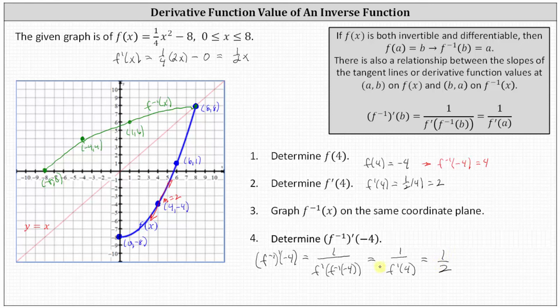Looking at this graphically, if we go to the inverse function and locate the corresponding point where x equals negative 4 — the point negative 4 comma 4 — and sketch a tangent line at this point, the slope of this tangent line is equal to the reciprocal of 2, or one-half. That's because 4 comma negative 4 on f of x corresponds to the point negative 4 comma 4 on the inverse function.